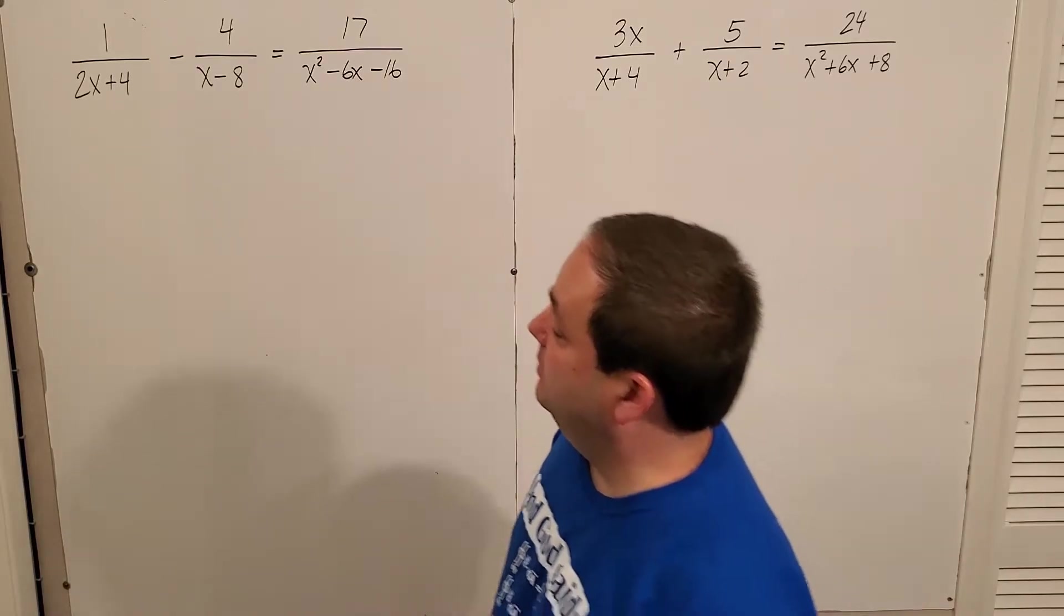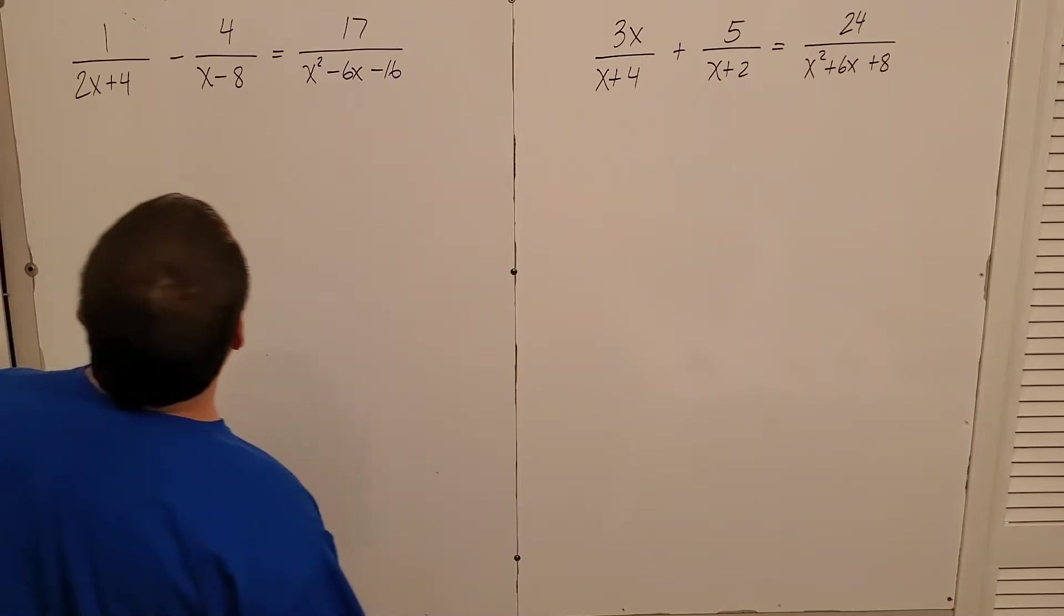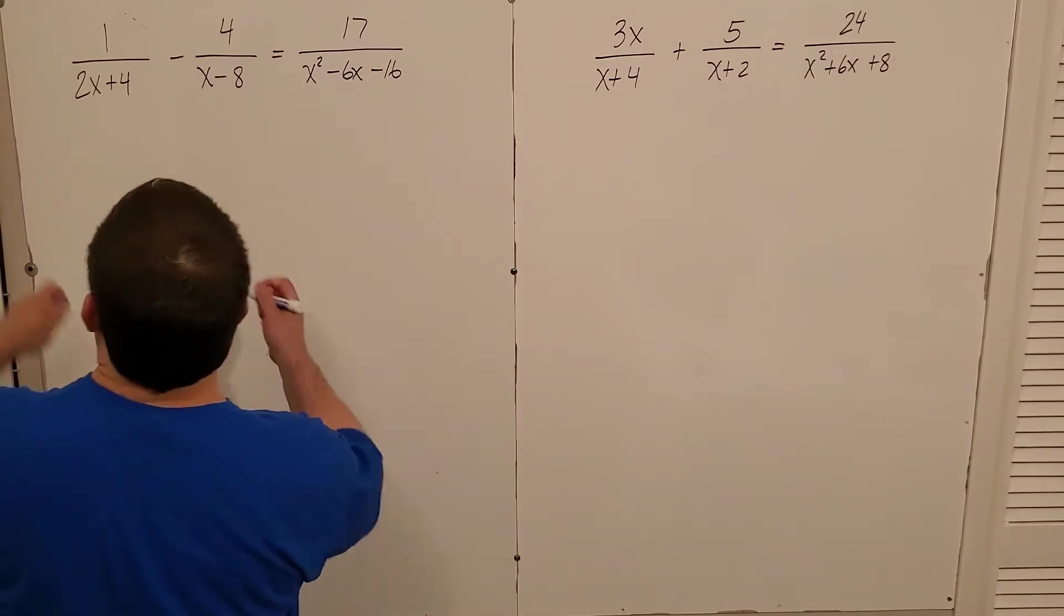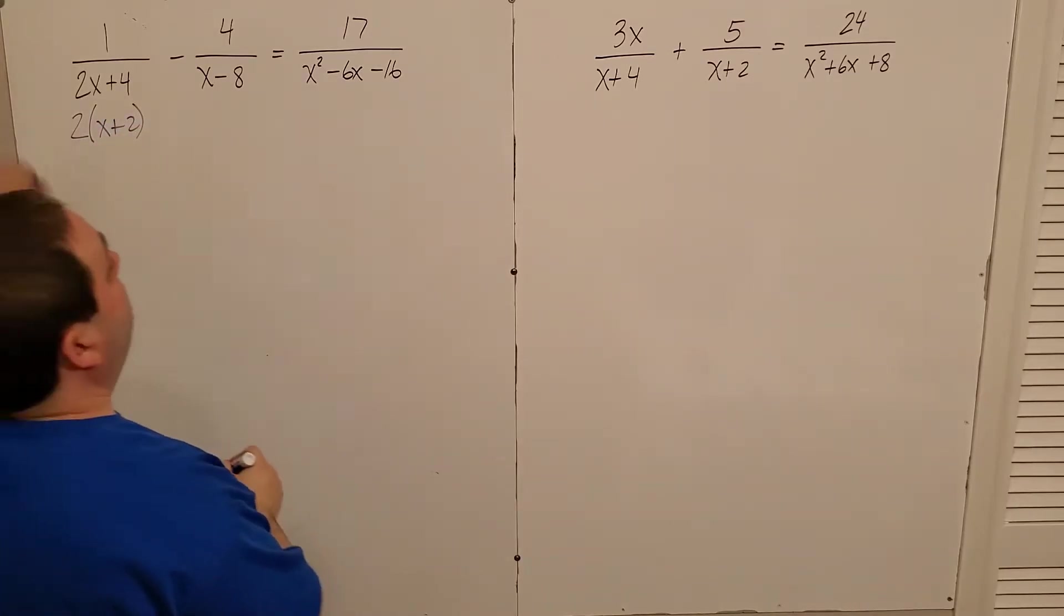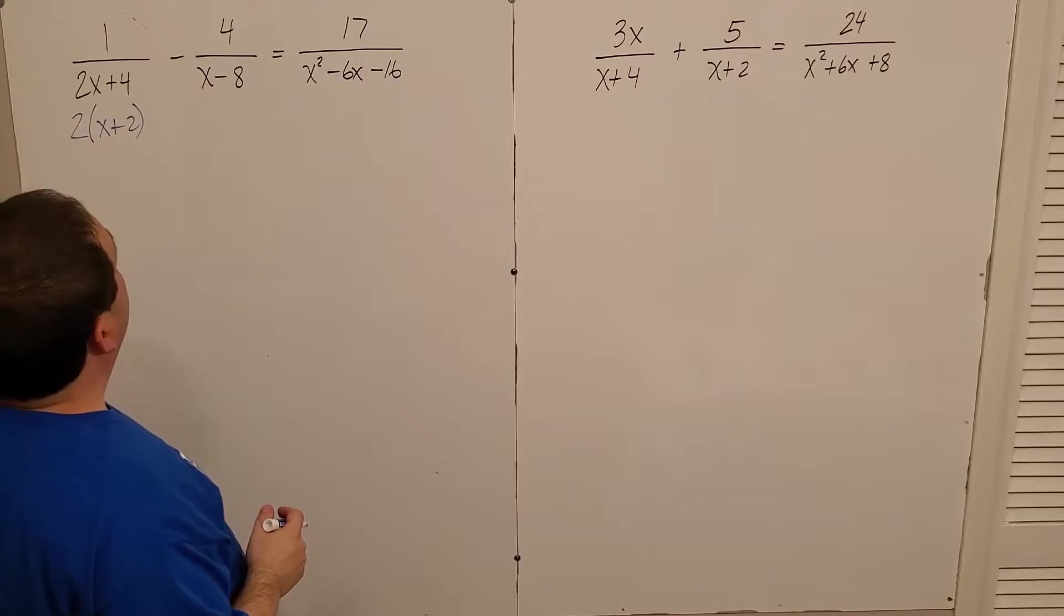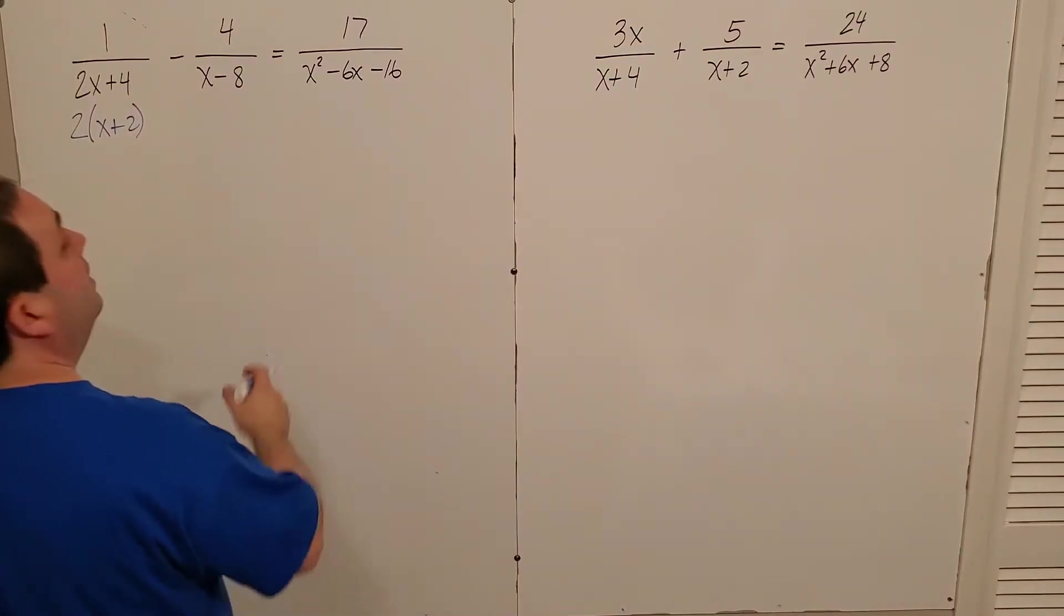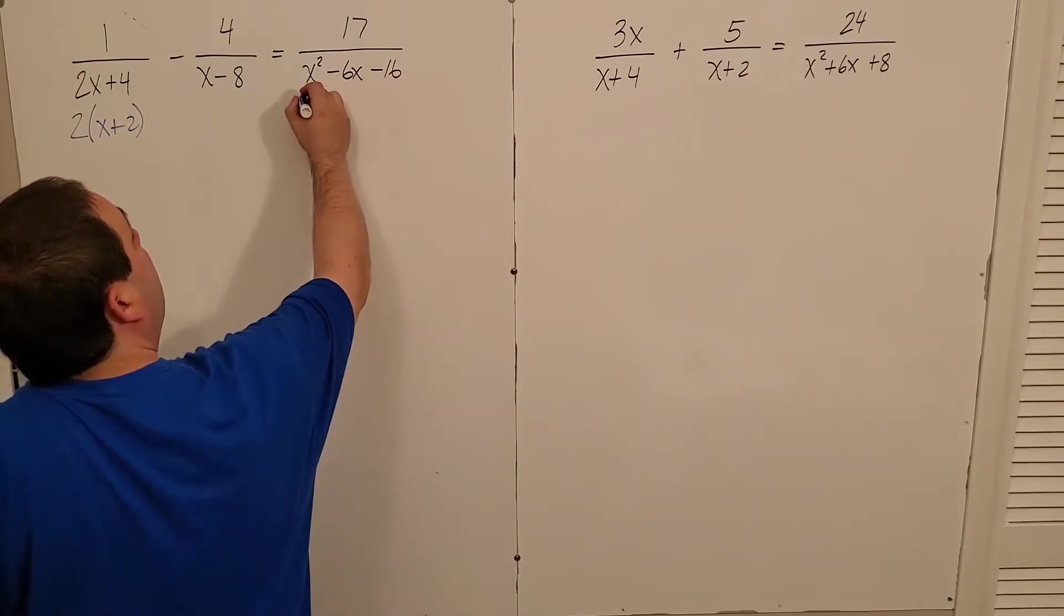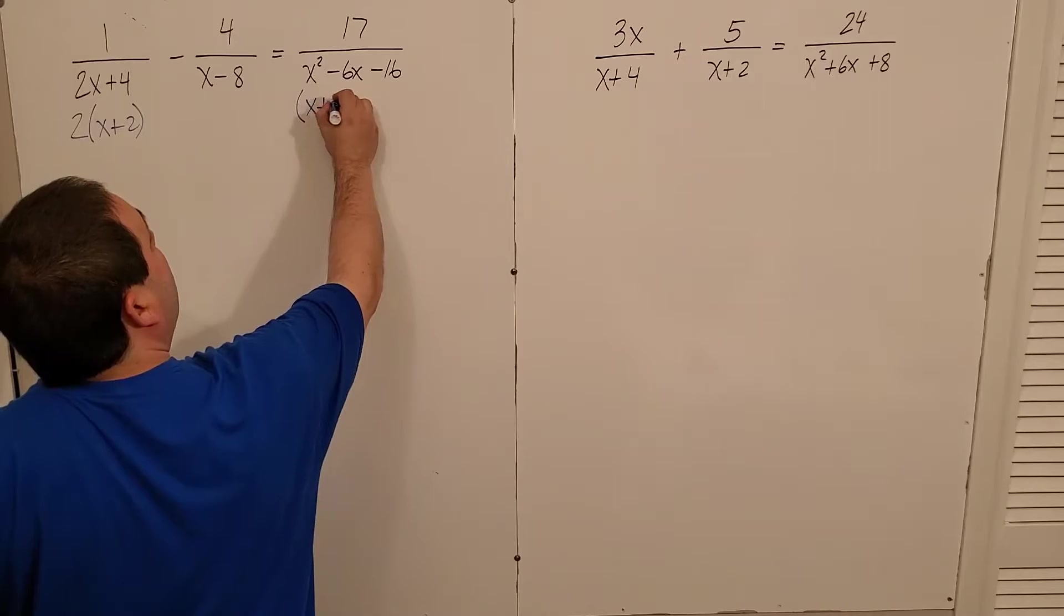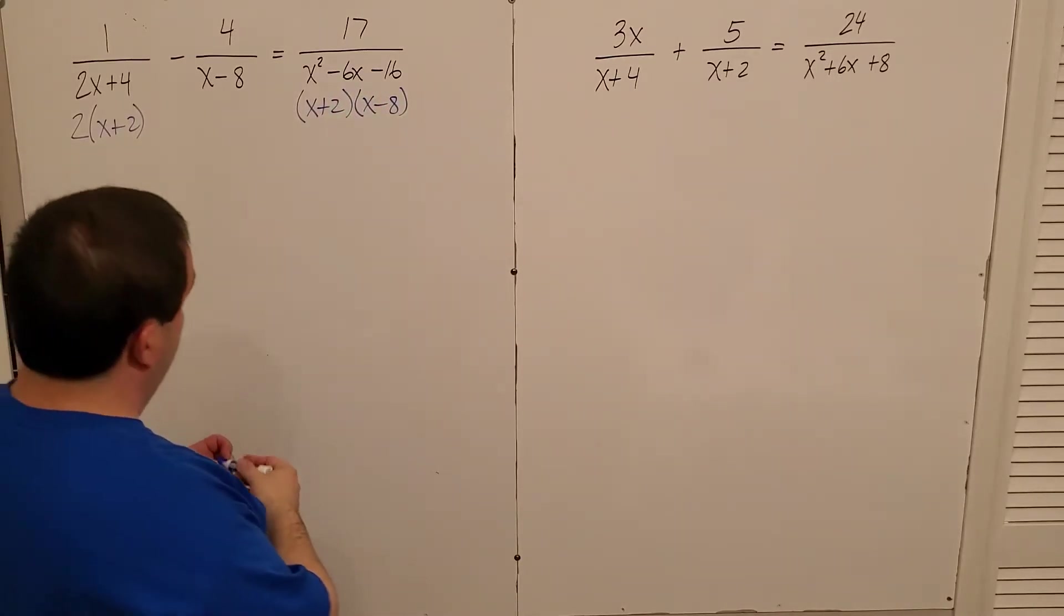So I'm going to start by factoring here. The two x plus four, I can factor that into two times x plus two, right? X minus eight does not require any factoring. x squared minus 16, though, I can factor into x plus two times x minus eight. All right.